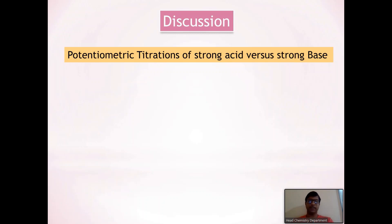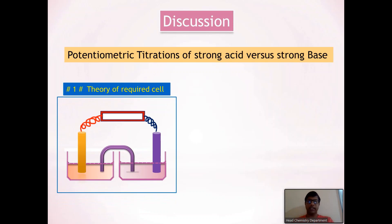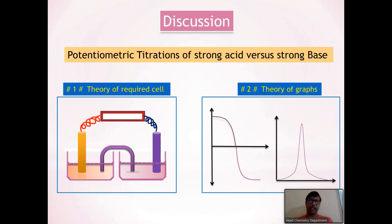Such type of analysis is based on the measurement of EMF of an electrochemical cell, called cell potential, denoted by EC and expressed in volt. In this video I am going to discuss the theory related to the electrochemical cell in part one, and after completion of the experiment, the theory related to the graph of this experiment in part two.